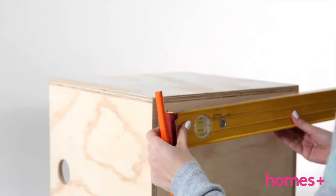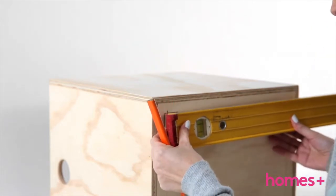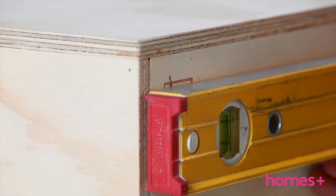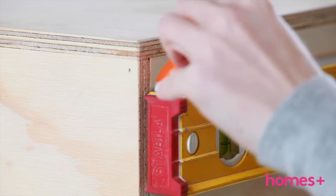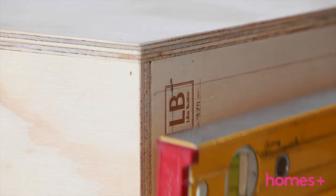Step one. With your ruler and pencil, measure a line on all four sides of the box, three centimeters in from the edges.